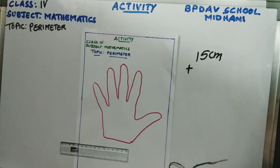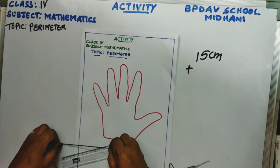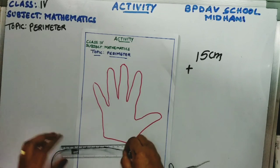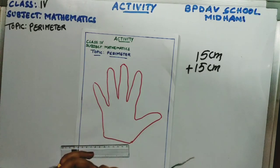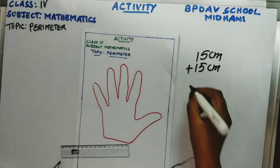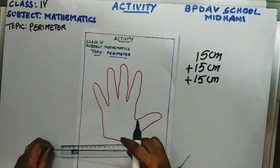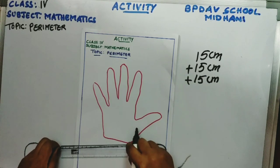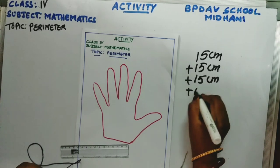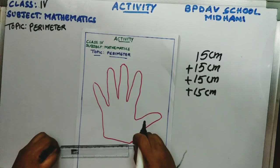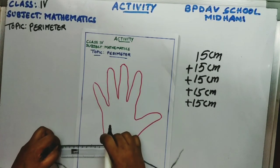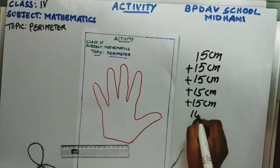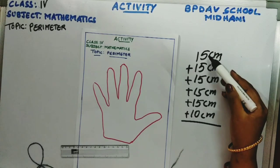So the first measurement is 15 centimeters. It is not ended — there is more. Again, one more section is 15 centimeters. Then again another 15 centimeters. Then again, measuring to the next point, it is 15 centimeters. And the remaining section is 10 centimeters.